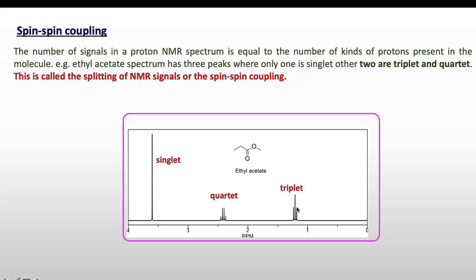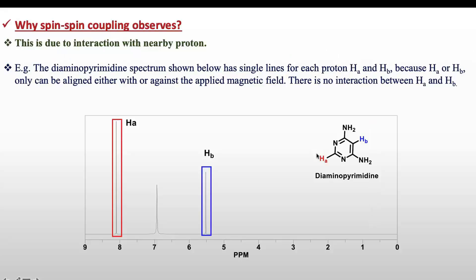Why is spin-spin coupling observed? It is due to interaction with nearby protons. Let's see the example of diaminopyrimidine, which has two protons H_a and H_b beside the amino proton. H_a and H_b are giving singlets in the NMR spectrum because they are far away from each other and are not interacting with each other.